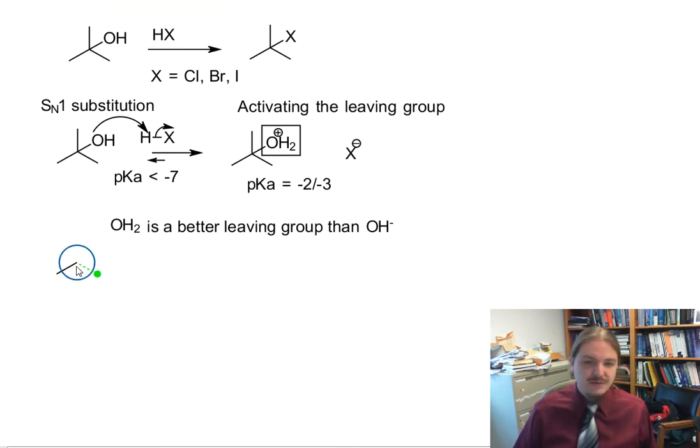After the proton transfer step, we move on to the actual SN1 steps. We now have a good leaving group. And that good leaving group leaves, as happens in SN1 substitution mechanisms. And lest we forget about it, our halide ion is still around. We're going to need that later.